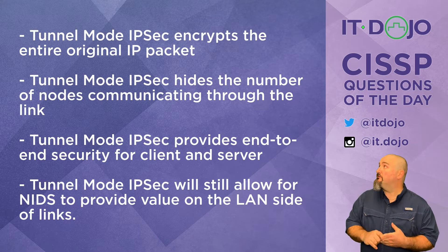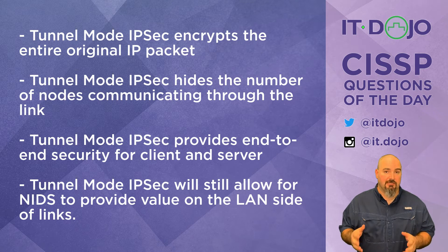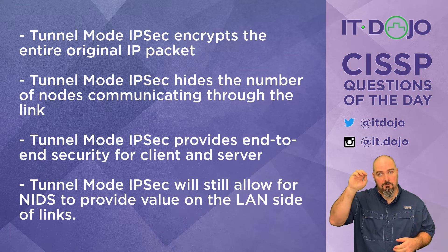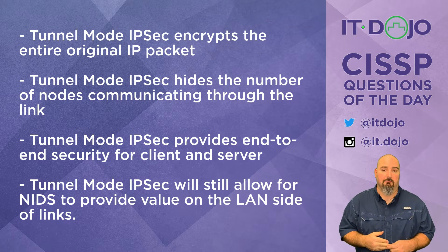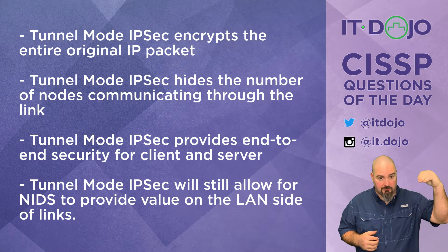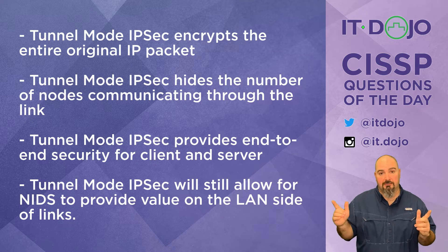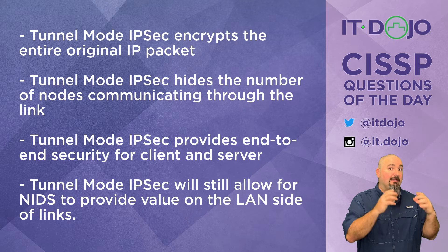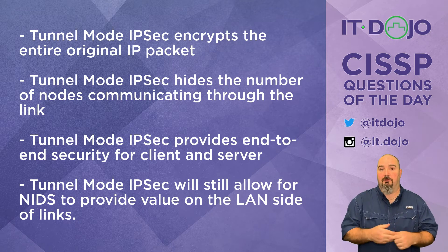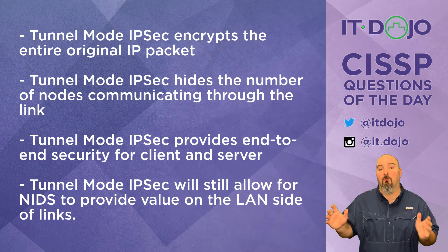Answer choice number one says that tunnel mode IPsec encrypts the entire original IP packet, and that is a true statement. The application layer payload, the transport layer, and the IP layer — all of it gets encrypted when you're doing tunnel mode IPsec. A packet originates from some client, journeys across a network until it gets to the nearside endpoint of the devices creating this tunnel. That device takes the entire packet, encrypts it, puts it inside a brand new IP packet, and sends it over to the other side of the tunnel.